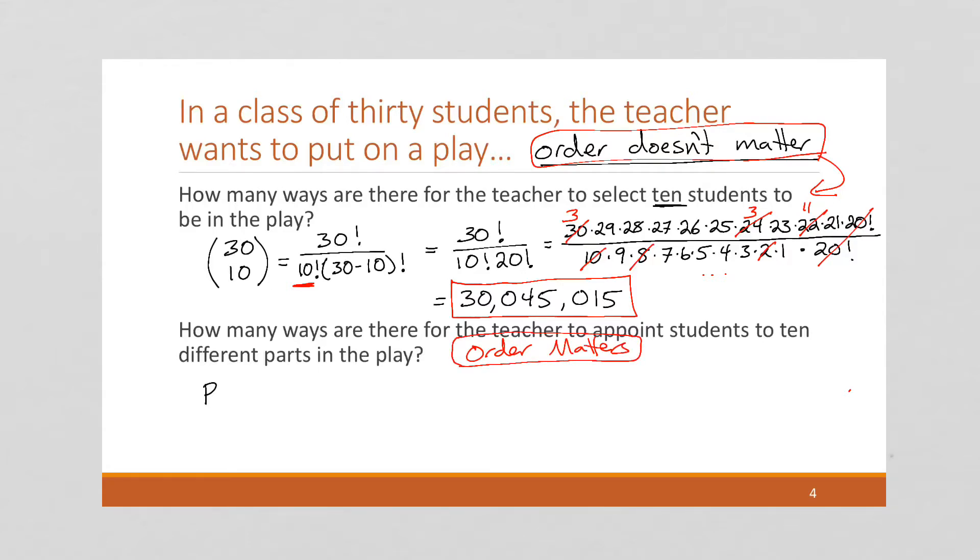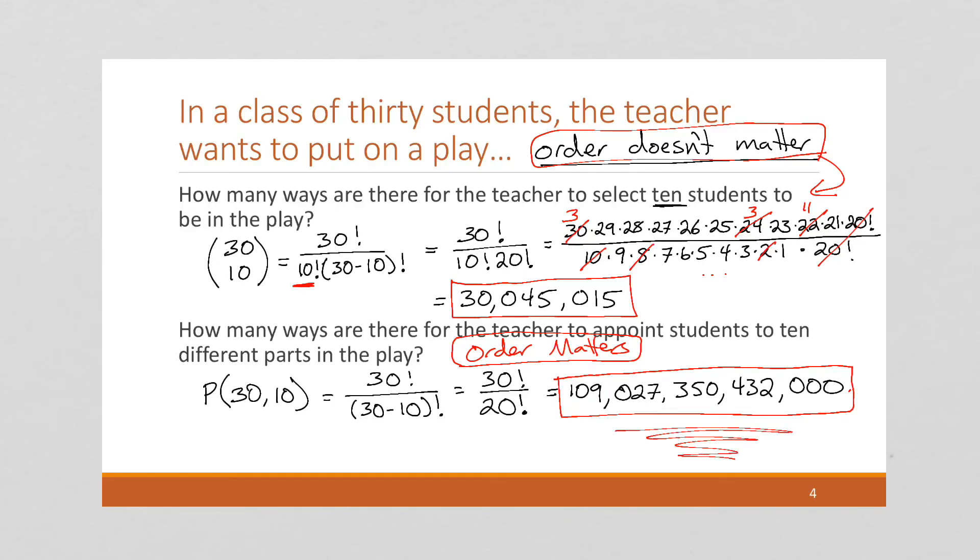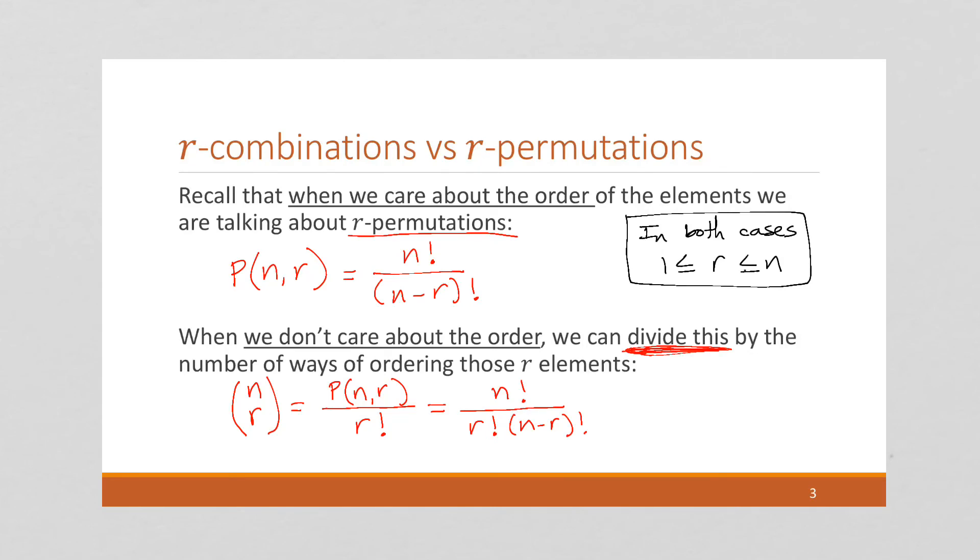So in this one down here, order matters. So instead, we're going to have the number of r-permutations, P(30,10). And that's going to be very similar. It's going to be 30 factorial divided by 20 factorial. And I'm going to let you figure this out. But if you work it out, it's going to work out to 109 trillion, 27 billion, 350 million, 432,000 even. So you can see how when the order matters, it massively increases the number of ways there are to do it. So once again, you can just memorize these formulas, but I think it's useful to understand how the formulas work and why.